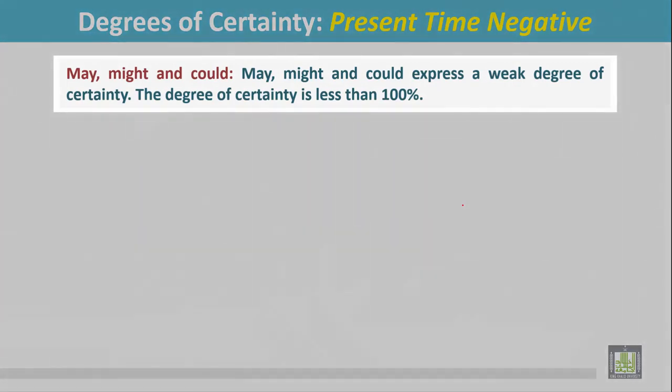Present time negative: may, might, and could. May, might, and could express a weak degree of certainty. The degree of certainty is less than 100%. See the example: